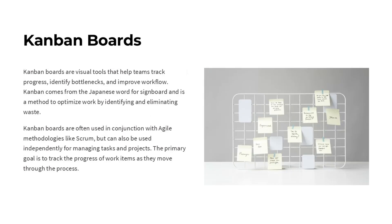Kanban boards are visual tools that help teams track progress, identify bottlenecks, and improve workflow. The word Kanban comes from Japanese and means signboard. Kanban is a method to optimize work by identifying and eliminating waste. Kanban boards are often used with Agile methodologies like Scrum, but can also be used independently for managing tasks and projects. The primary goal is to track the progress of work items as they move through the process.